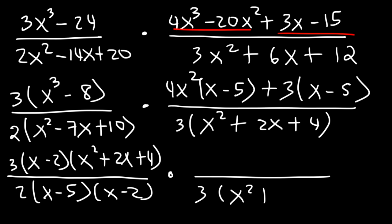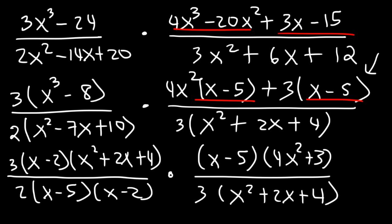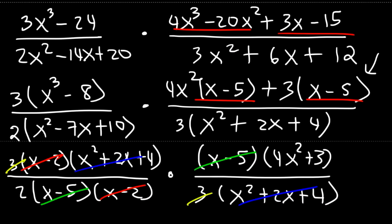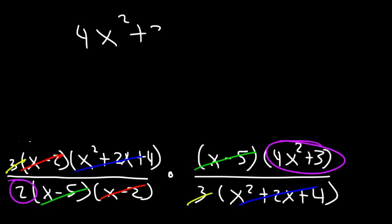Going back to the factored expression (x − 5)(4x² + 3), we take out (x − 5) since it's common to both terms, leaving (4x² + 3). Now the rational expression is completely factored. Let's cancel: (x − 2), (x² + 2x + 4), (x − 5), and a 3 all cancel. The only things left are (4x² + 3) and 2. So the final answer is (4x² + 3) divided by 2.